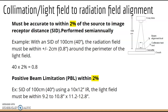Collimation — light field alignment — tests how accurate your light field is compared to what's actually produced on your image. In the clinical world, what your light field is open to should match your exposure. It must be accurate within 2% of the SID. If given a word problem with SID in centimeters or inches, you'll need to calculate that 2%.